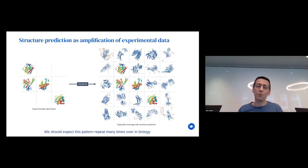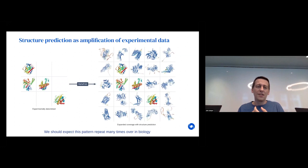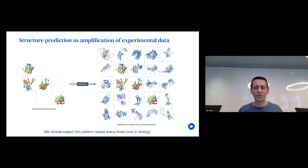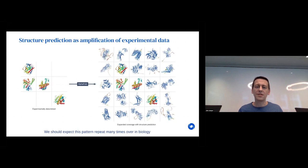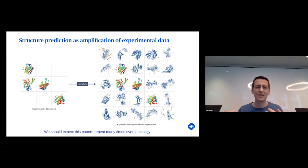Stepping back, I hope that in 10 years AlphaFold will be seen as the moment that opened the floodgates of machine learning really changing how we think about structural biology and larger biological questions. Structure prediction and machine learning in general act as an amplifier for the incredible work of the experimental community — taking sparse experimental data and completing the picture. What will be exciting in coming years is how we design experiments to train machine learning models, and how we think about this interchange between experiment and machine learning.